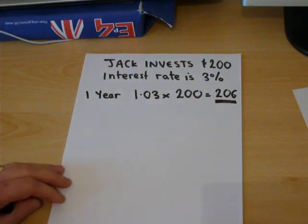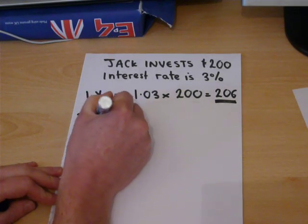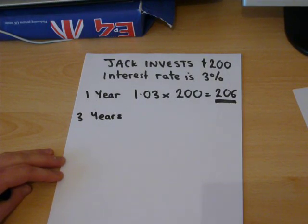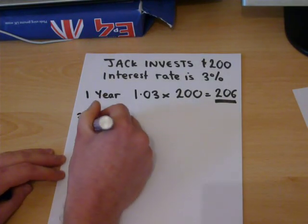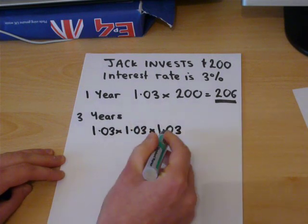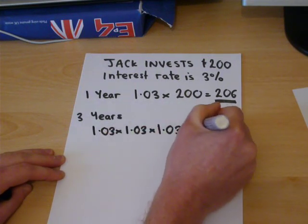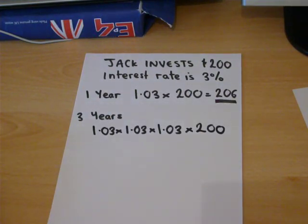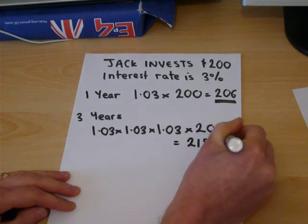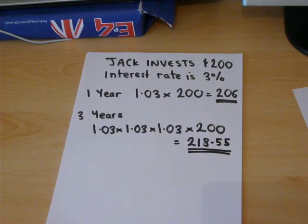However, suppose you wanted to know after 3 years how much Jack had in his account. This is a multiple increase over 3 years. A calculation you can do is 1.03 × 1.03 × 1.03 — year 1, year 2, year 3 — times by the original amount, and then we end up with £218.55. This is money, and this shows how much he has after 3 years.